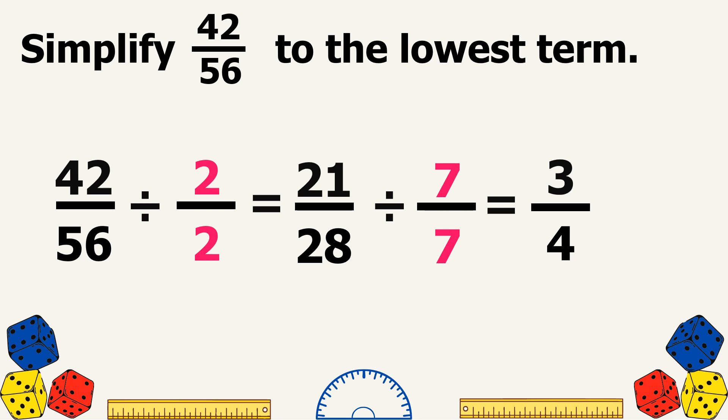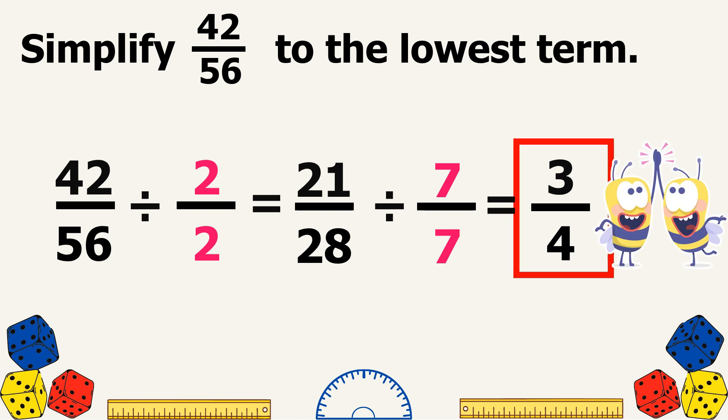3 and 4 cannot be divided anymore by a common factor other than 1, meaning their GCF is already 1. So the lowest term of 42 over 56 is 3 fourths.